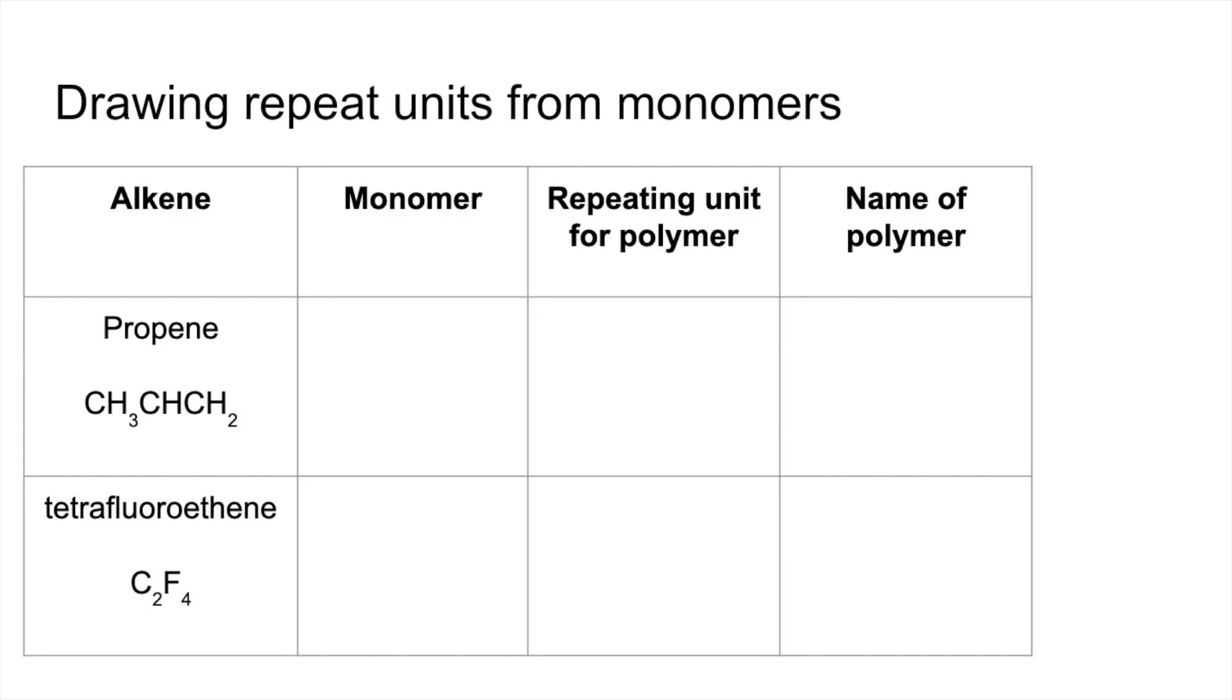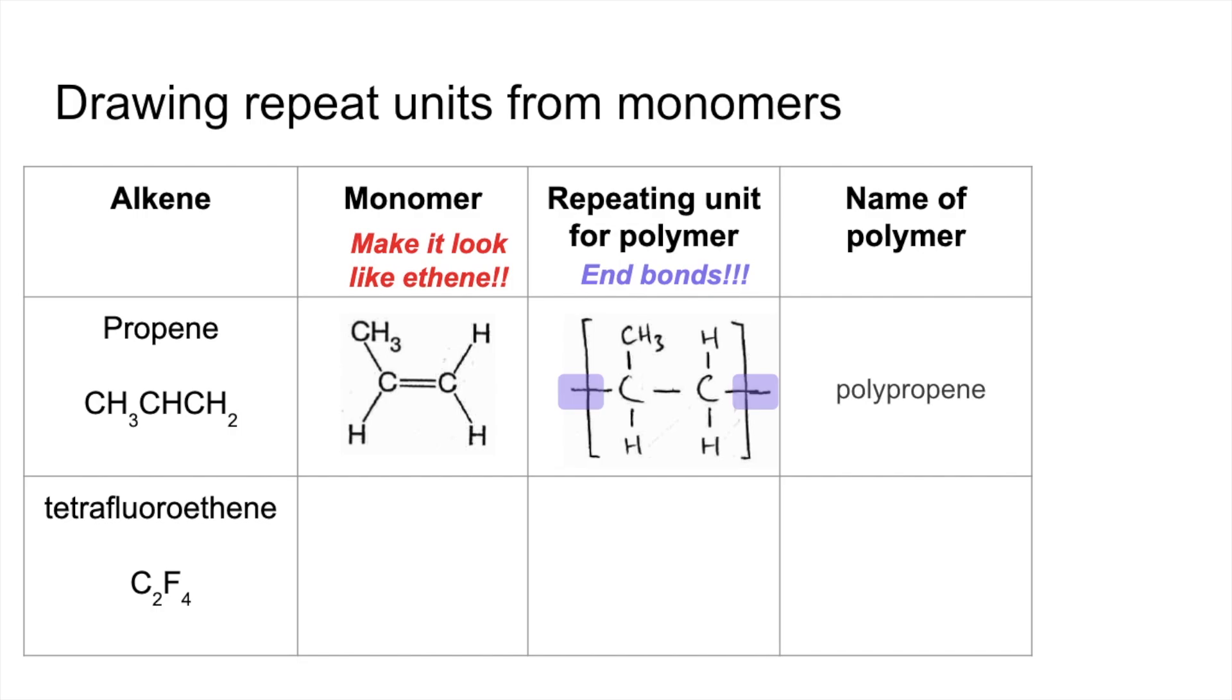Propene and tetrafluoroethene. The best thing to do is to make it look like ethene. Propene in this ethene style looks like that, and then that makes it really easy to draw the repeat unit. Remember, don't forget your end bonds. The name of that polymer would literally be polypropene, so you just stick the word poly in front of the alkene that it's made from.